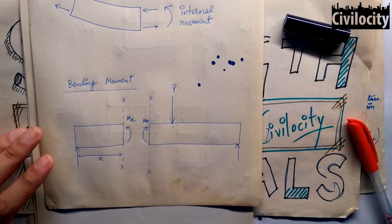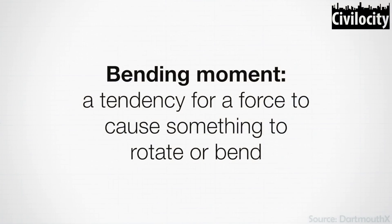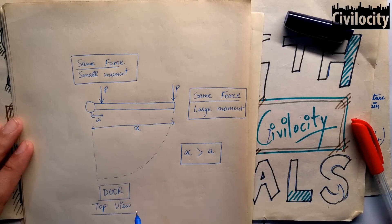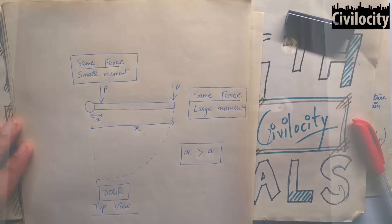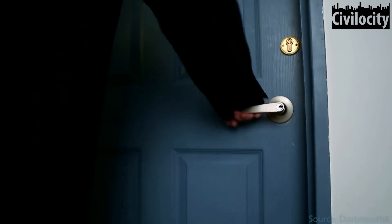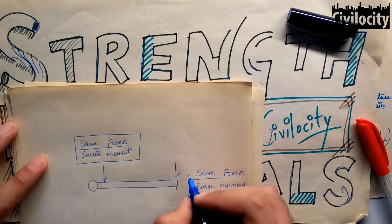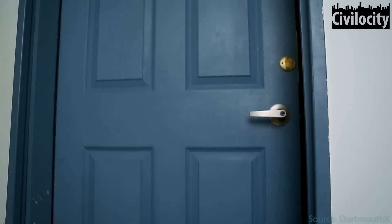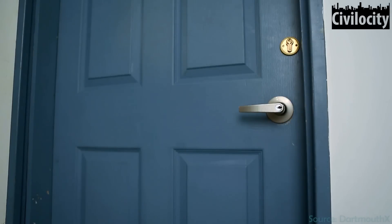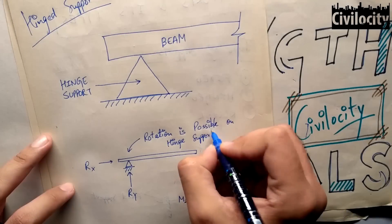To bending ka ek simple sa matlab hai: a tendency for a force to cause something to rotate or bend. Isko hum simply force into distance se find out karte hain. Iska real life mein sabse acha jo example hai, wo aapke ghar ka door hai. To jitni dure hum support se force lagayenge, utna hi asani se wo kholega. Agar hum wohi force supports ke pas lagayen, to hume utni hi jyada force lagani padegi, jitna kam uska distance hai. Iska matlab, agar humari force support se dure hai, to jyada bending moment produce ho raha aur agar supports ke pas hai, to kam bending moment produce ho raha. Aur supports pe bending moment wo zero hota hai, in case of hinge and roller supports.